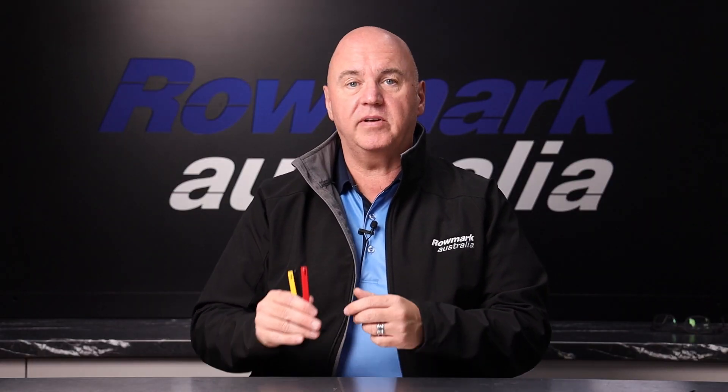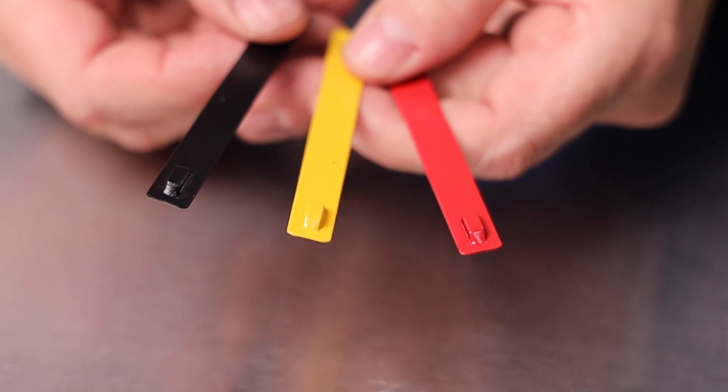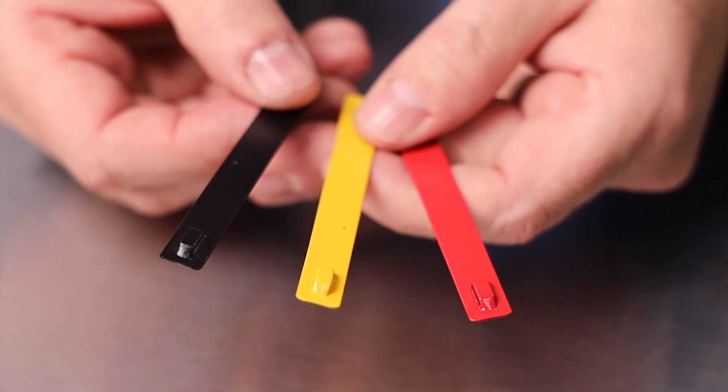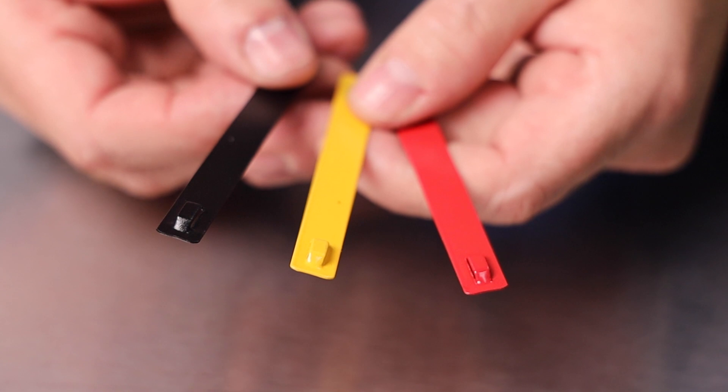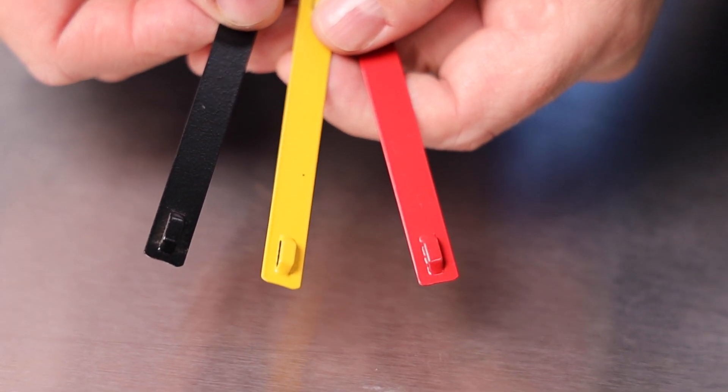Our tags also come in three different colors: red, black and yellow. They can withstand temperatures up to 120 degrees Celsius and they're great in high heat applications such as direct sunlight or steam pipes.